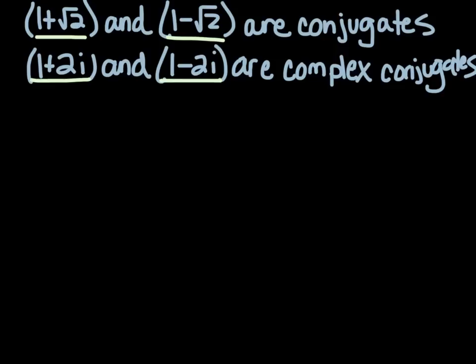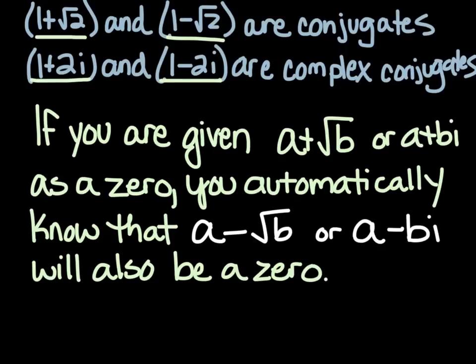And those are the kinds of things you would get if you were getting an irrational or a non-real zero. If you were doing the quadratic formula, you'd get plus or minus, and then the square root, right? So anytime you have a zero that looks like one of these, you automatically know that you're going to have to have the conjugate that goes with it as a zero as well. So write that baby down. If you're given a plus the square root of b or a plus bi as a zero, you automatically know that a minus the square root of b or a minus bi, the conjugate of that, will also be a zero. And that's what we're going to do.